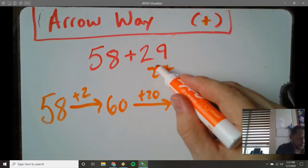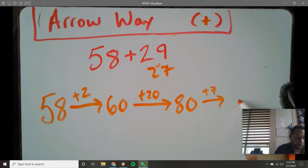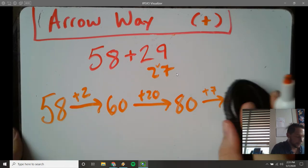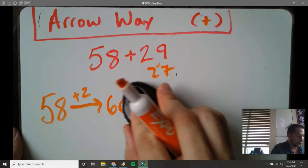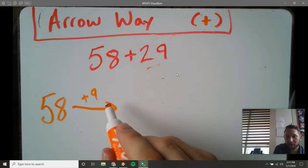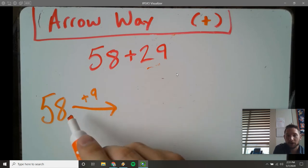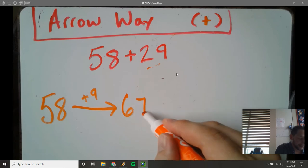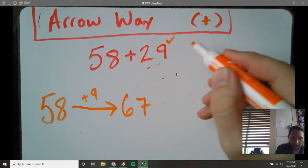If those number bonds are a bit too difficult, breaking the 9 into a 2 and a 7, you could also go 58 plus 9. I can even count on my fingers if I want. I can count my ones. 58 plus 9 would be 67. I've done that. Now I need to add 20.